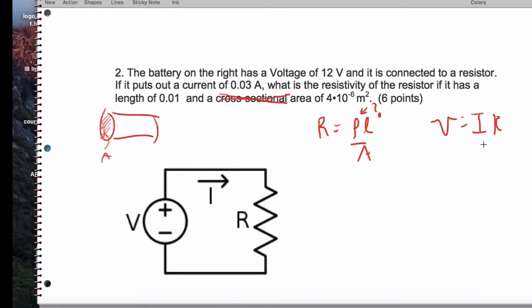I know that V equals IR. And so what I can do is I can actually substitute V over I equals rho L over A. If I really want to be sassy, I can do some algebra.